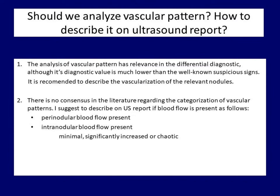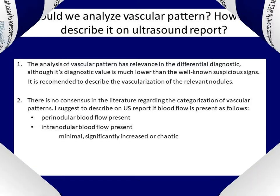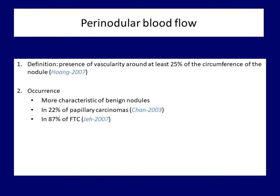What is the relevance of nodule vascularity? Compared to suspicious characteristics, blood flow has much less relevance in differential diagnostics. On the other hand, it may have importance in individual patients, and therefore most guidelines suggest describing nodule vascularity in the ultrasound report. It has more importance to detect the degree of intranodular flow than to detect its mere presence. We have one definition regarding perinodular blood flow: we speak of it if flow is observed in at least 25% of the circumference of a nodule. This feature occurs more often in benign lesions.